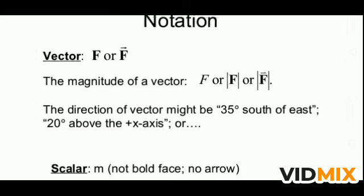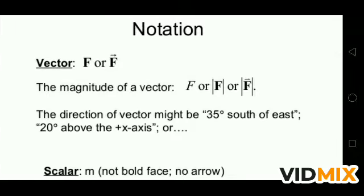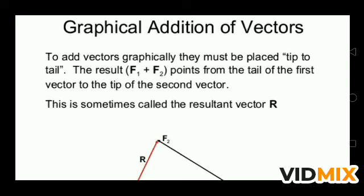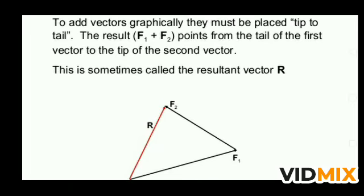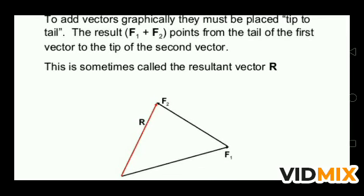This is the way to represent vector quantity while writing. Now how can you add any given vector? Suppose you have to add two vectors F1 and F2. Vector F1 has a starting point (tail) and an endpoint (head) directed in some direction. The second vector F2 also has a head and a tail. The rule to add two vectors graphically: they must be placed tip to tail — the tail of the second vector is placed on the tip of the first.